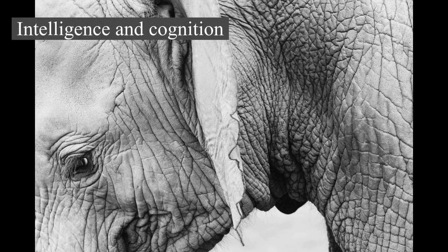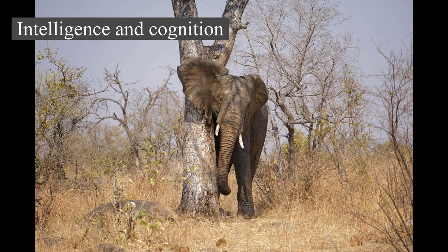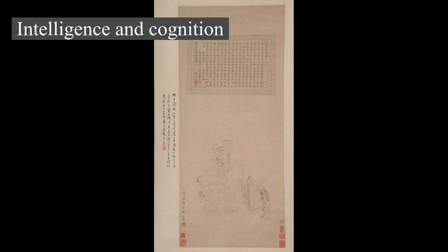Intelligence and cognition: Elephants exhibit mirror self-recognition, an indication of self-awareness and cognition that has also been demonstrated in some apes and dolphins. One study of a captive female Asian elephant suggested the animal was capable of learning and distinguishing between several visual and some acoustic discrimination pairs. This individual was even able to score a high accuracy rating when retested with the same visual pairs a year later. Elephants are among the species known to use tools. An Asian elephant has been observed modifying branches and using them as fly swatters, though tool modification by these animals is not as advanced as that of chimpanzees. Elephants are popularly thought of as having an excellent memory, and they possibly have cognitive maps to allow them to remember large-scale spaces over long periods of time.